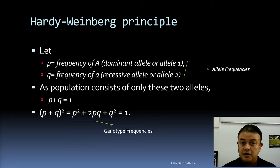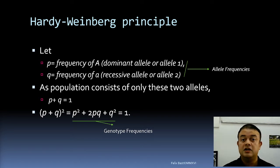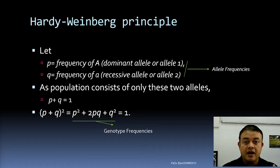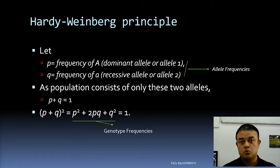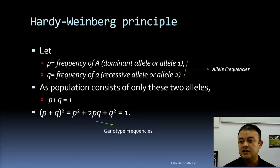Remember that evolution is defined as a change in allele frequencies of a population over generations over time. So this is like a null hypothesis — evolution is not happening, which is why the frequencies are not changing. If you look at the history of this principle, it goes back to Yule and Pearson.